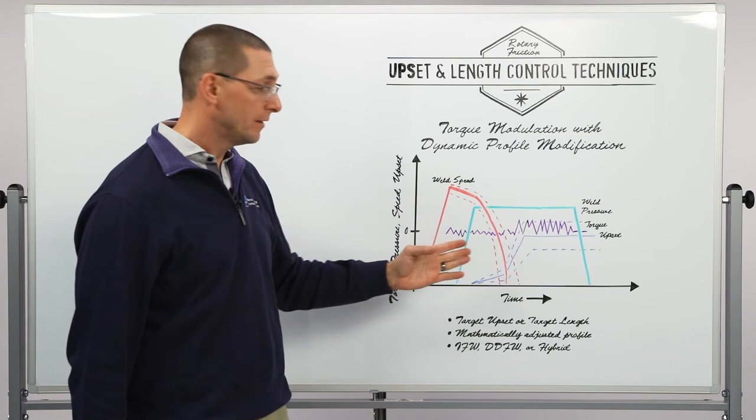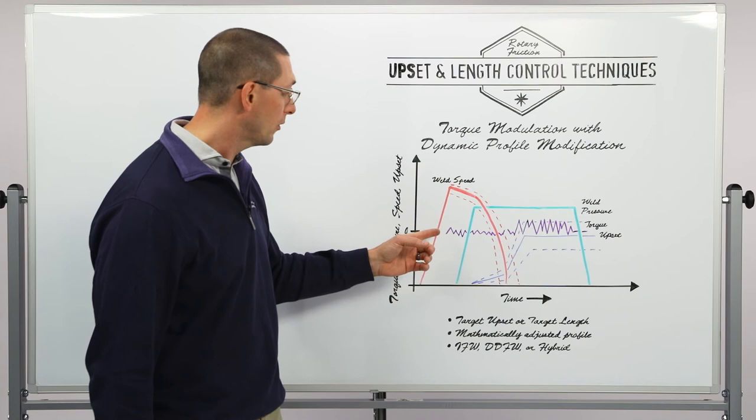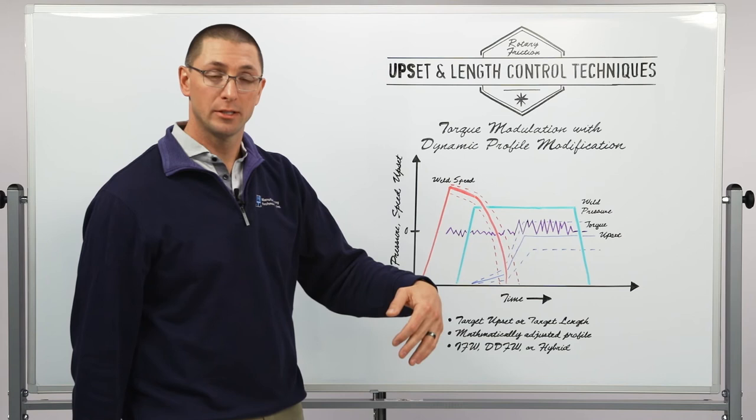Now when I do this I can apply the same technique of torque modulation where I use my current weld compared to the upset profile to generate an error signal. And if I need less upset in this new profile then I'm going to increase my weld torque. In doing so the electric motor adds energy to the system and I get more upset.